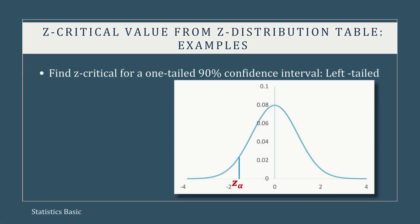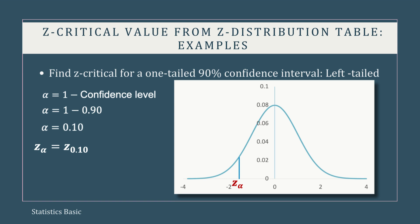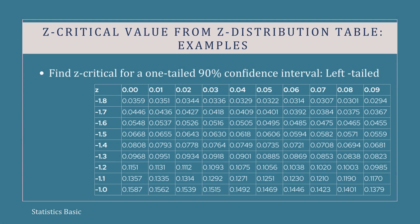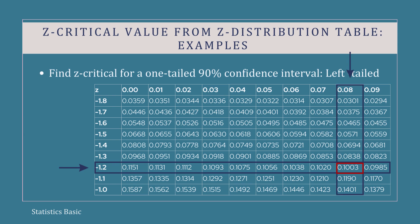In the second case, we are asked for a z-critical for a left-tailed 90% confidence interval. For a 90% confidence interval, the significance level is 1 minus the confidence level, that is 1 minus 0.90. The critical value is z0.10. The critical value lies on the left tail of the distribution. In the z-distribution table, locate the cell for the cumulative probability of 0.10. The corresponding row is z equals minus 1.2 and the corresponding column is z equals 0.08. This means the z-critical value is minus 1.28.